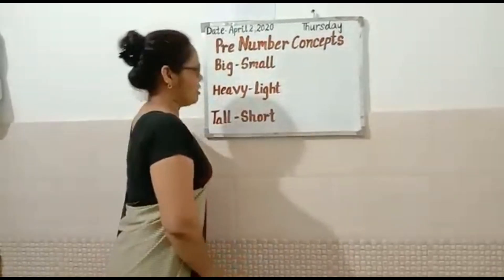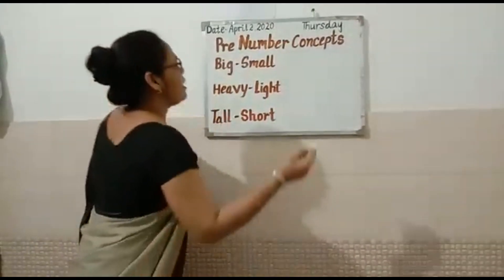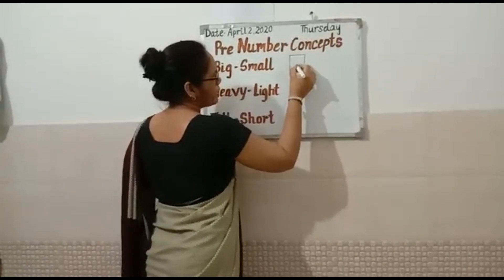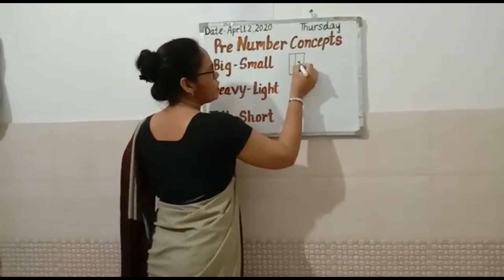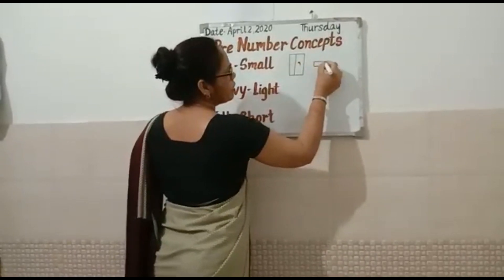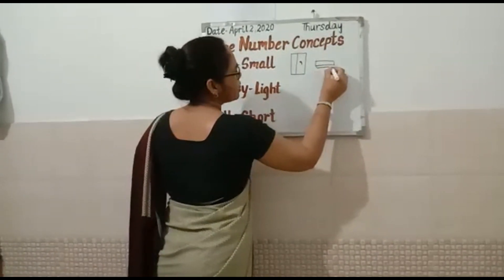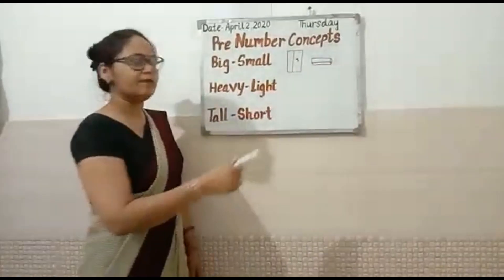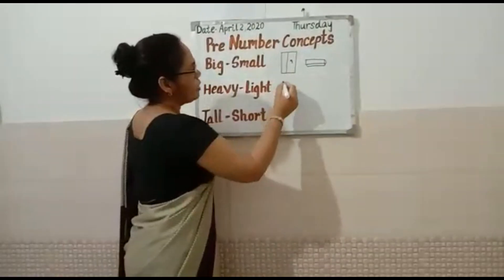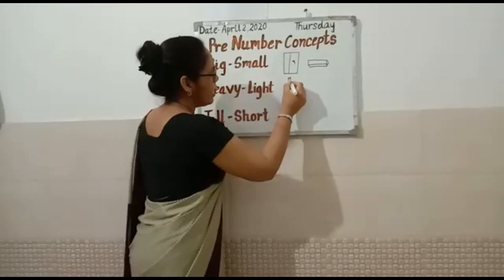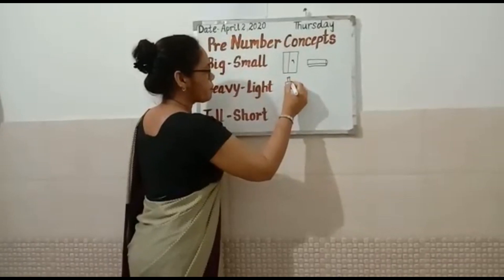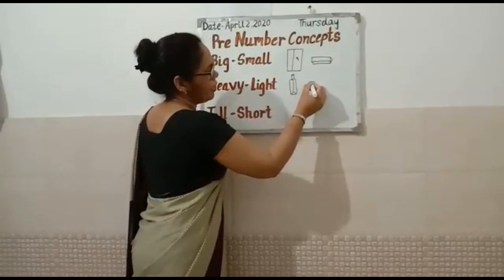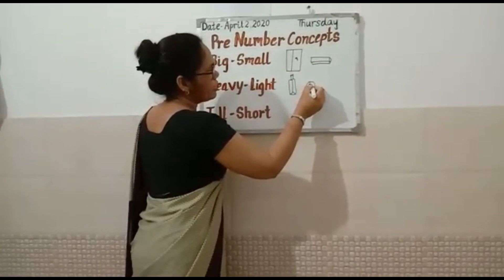For big and small — your Elvira is big, but your geometry box is small. Elvira is big and your geometry box is small. For heavy and light — your bat is heavy, but your ball is light.